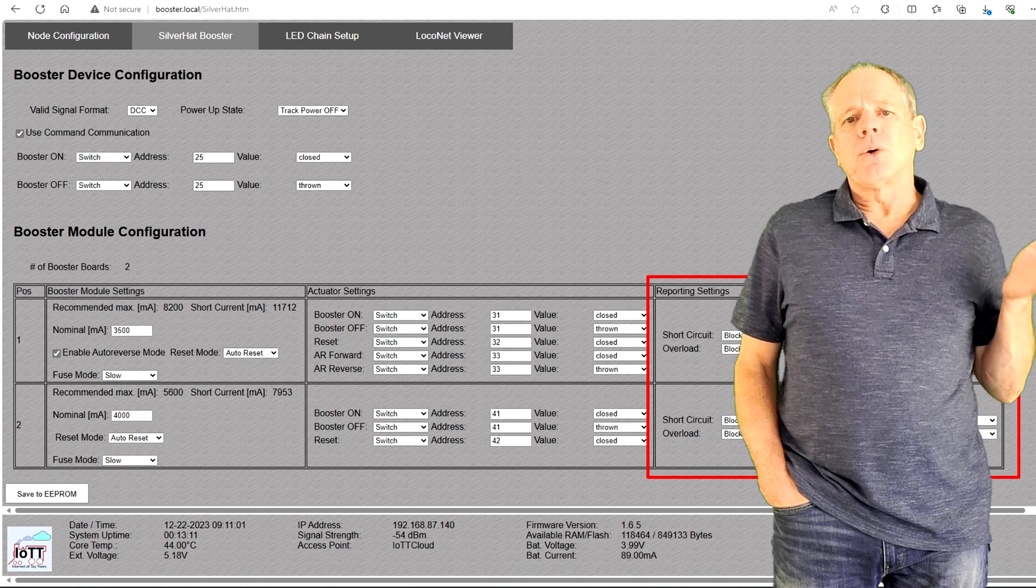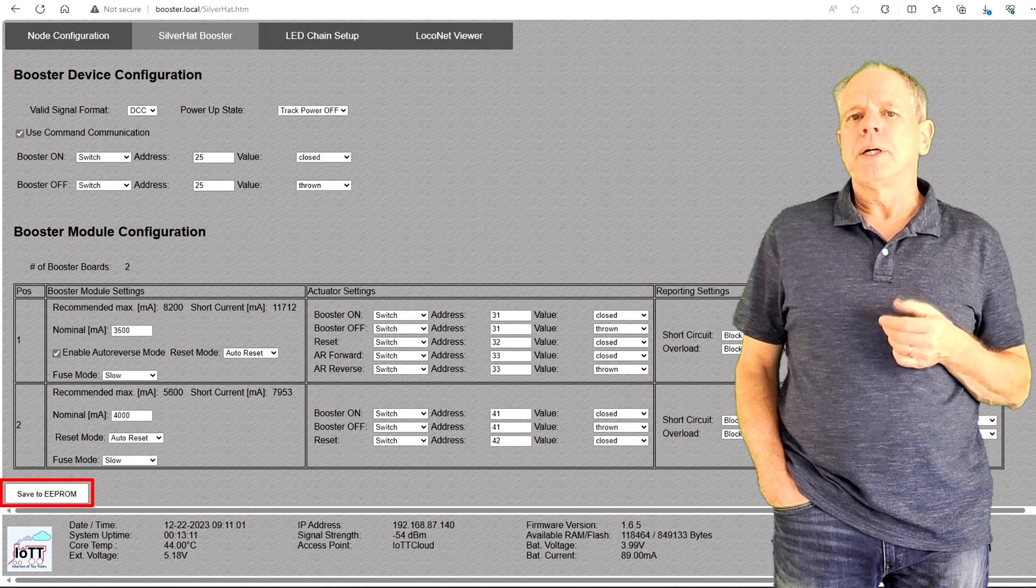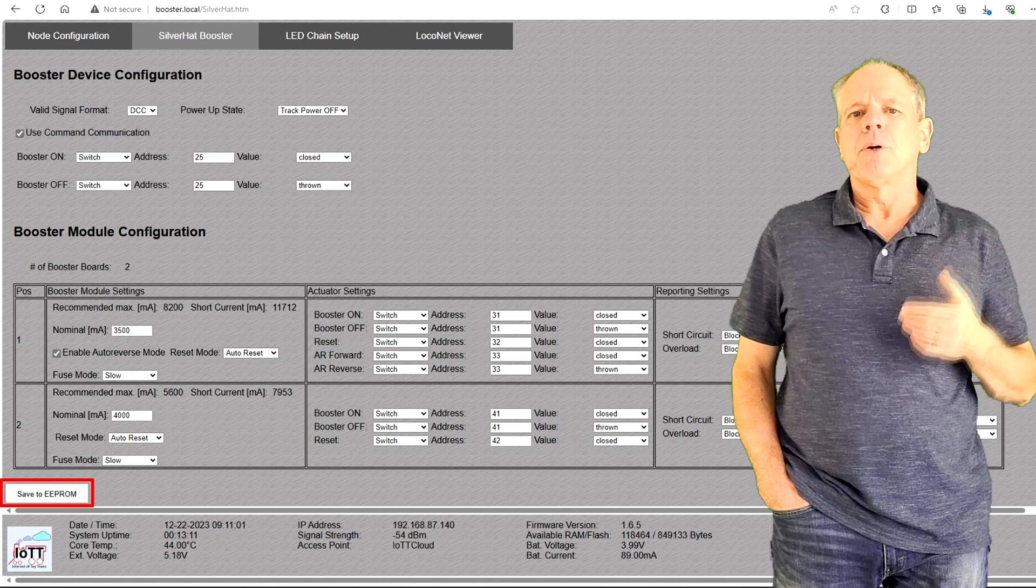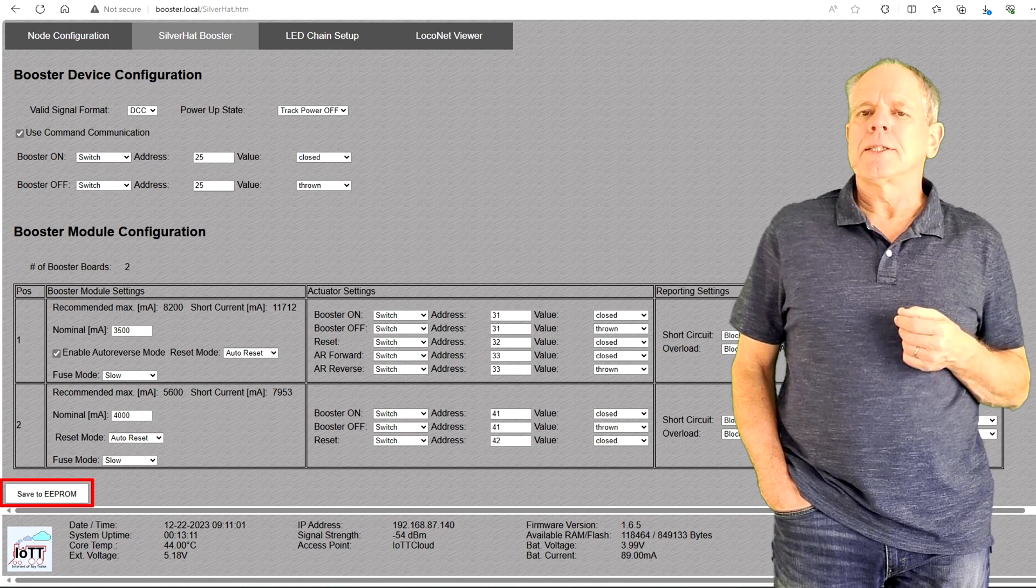And that is all to the setup. Again, click Save to EEPROM to store all these settings in the EEPROM of the Arduino, so that they will be reloaded after a restart.